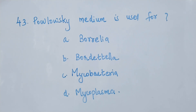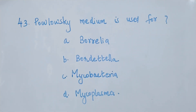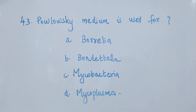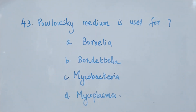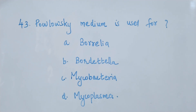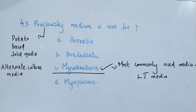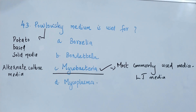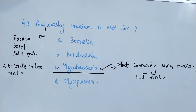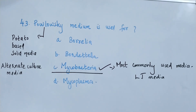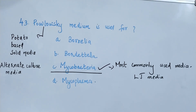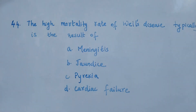Question number 43. Pawlowski medium is used for: option A, Borrelia; option B, Bordetella; option C, Mycobacteria; option D, Mycoplasma. Pawlowski medium is used for the cultivation of Mycobacteria. The most commonly used media for mycobacteria is Löwenstein–Jensen medium. Pawlowski medium is used as an alternate culture media and it is a potato-based solid media.